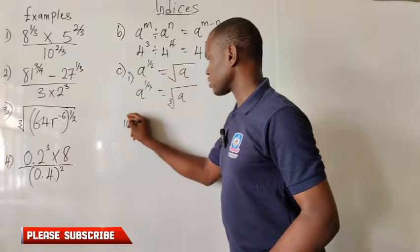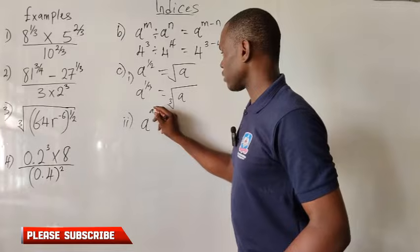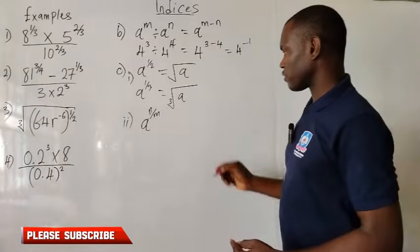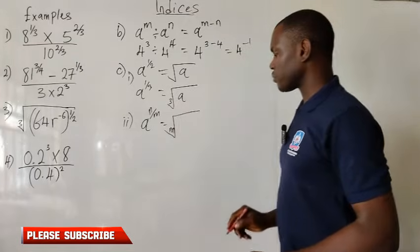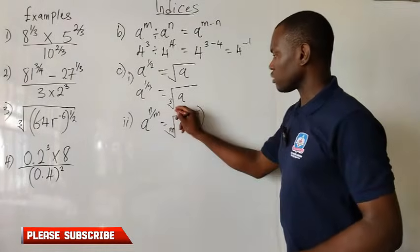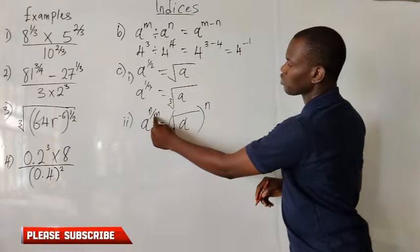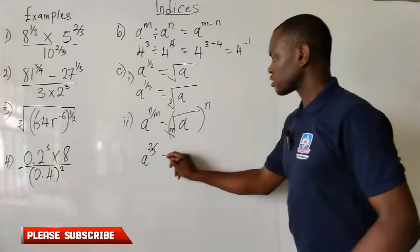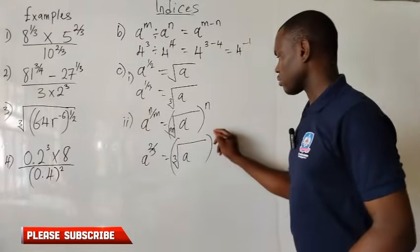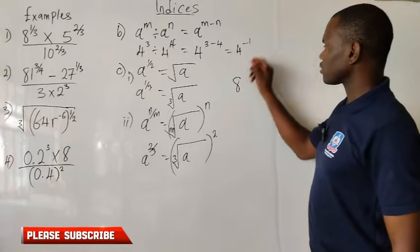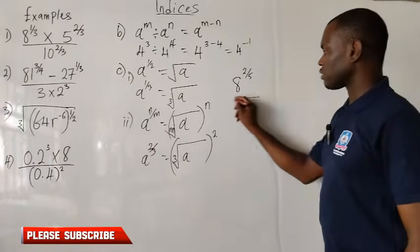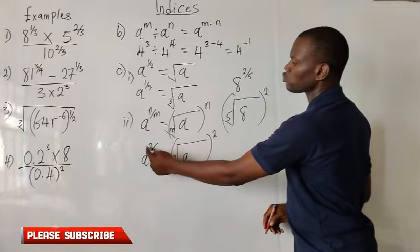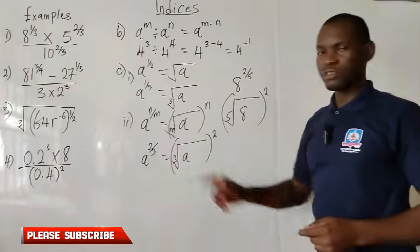Sometimes we are given a raised to the power of n over m — a number at the numerator and a number at the denominator. The denominator is your root and the numerator is your power. So you will have the m-th root of a raised to the power of n. For example, a raised to the power of 2 over 3 gives the cube root of a raised to the power of 2. Another example: 8 raised to the power of 2 over 5 is the same as the fifth root of 8 raised to the power of 2. Each time your numerator is not 1, it becomes the power of the given expression.